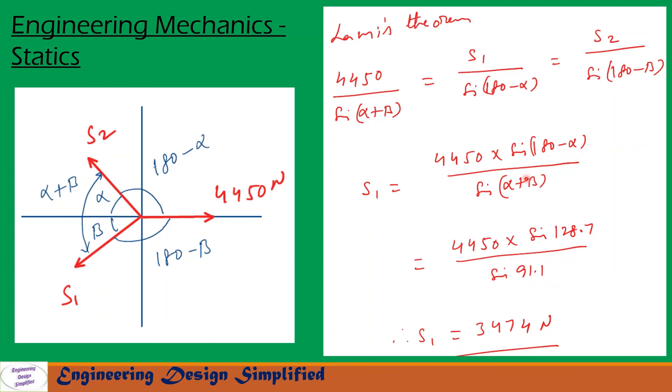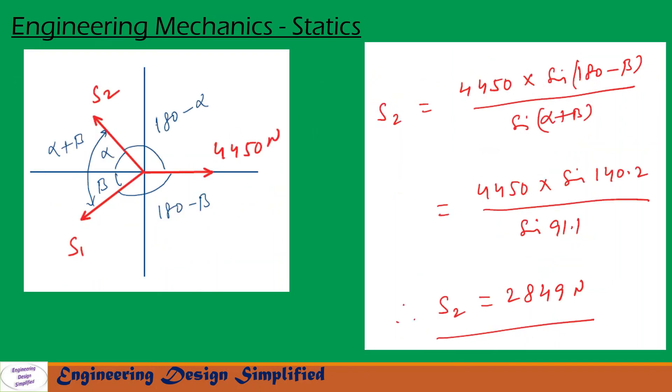And from first and last terms of Lamy's theorem we have seen in previous slide, we can write S2 equals 4450 times sin(180 minus beta) by sin(alpha plus beta). So after substituting all the values and simplification, we get S2 equals 2849 Newton.